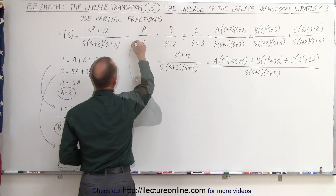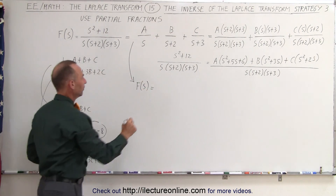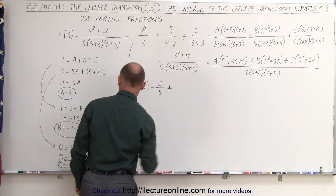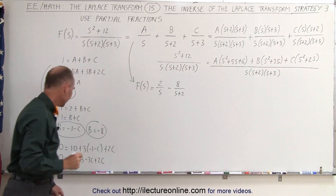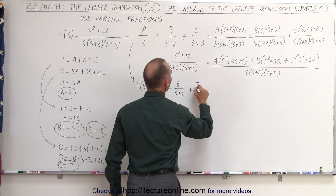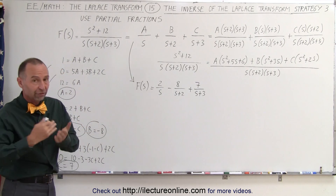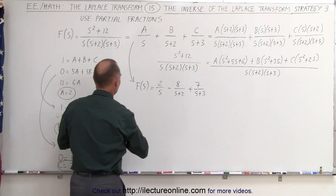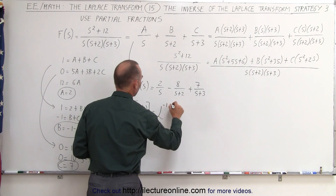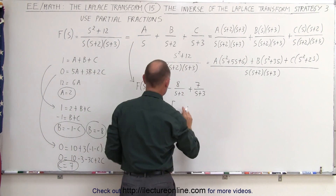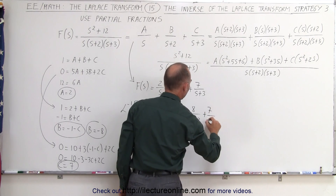I can now plug those values back into the equation. The function in the frequency domain equals 2 divided by s, minus 8 divided by s plus 2, plus 7 divided by s plus 3. Now I go to the table where I can see the transfer between the functions in the time domain and the frequency domain, and I can do the inverse Laplace transform. So the inverse Laplace transform of F of s equals the inverse Laplace transform of 2 over s minus 8 over s plus 2 plus 7 over s plus 3.